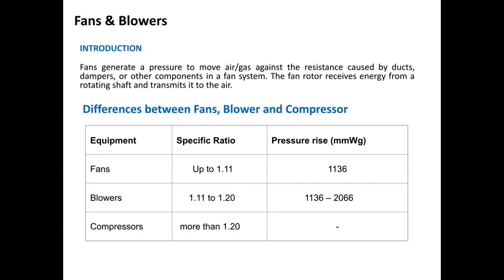A fan is a device which will provide air for ventilation and industrial process requirements. Fans generate a pressure to move air against the resistance caused by ducts, dampers and other components in a fan system. To differentiate fans, blowers and compressors, we have something called a specific ratio, which is the ratio between the outlet and inlet pressure.